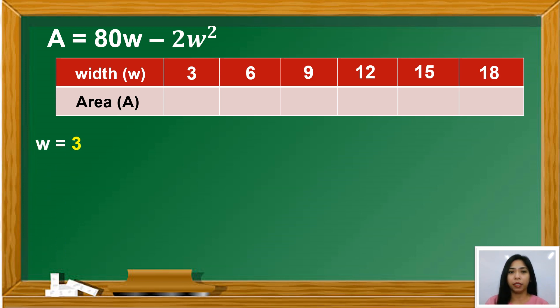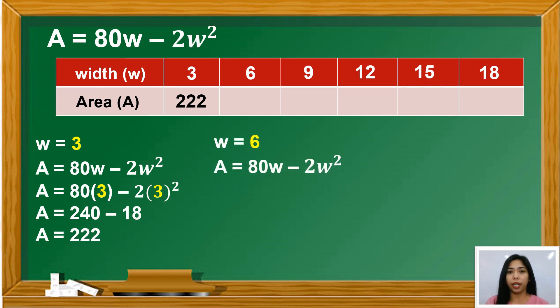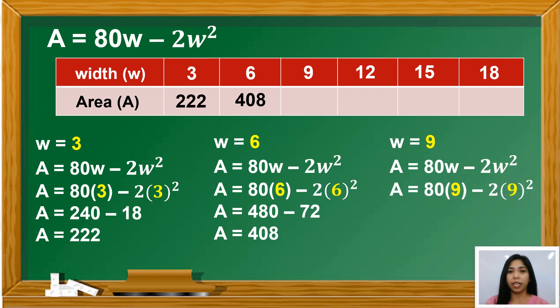If W equals 3, then we have A equals 80 times 3 minus 2 times 3 squared. So we have 240 minus 18. Therefore, A equals 222. If W equals 9, then we have A equals 80 times 9 minus 2 times 9 squared. So we have 720 minus 162. Therefore, A equals 558.